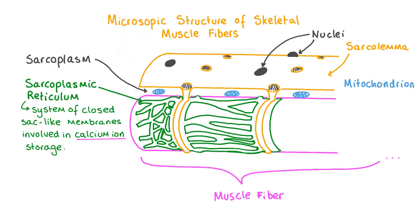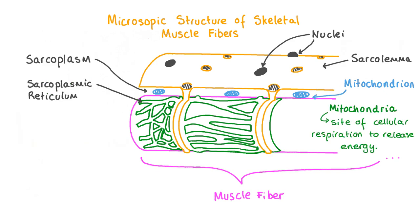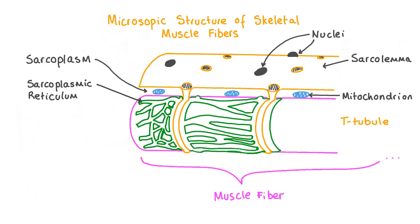Muscle cells require a large amount of energy when they contract, so they also contain many mitochondria, which are the site of cellular respiration to release the energy needed for muscular contraction. Parts of the sarcolemma surrounding the muscle fiber fold inwards to form structures called transverse or T-tubules. This means that an impulse arriving from a motor neuron can spread along the whole muscle fiber's sarcoplasm so that all the cells in the muscle can contract simultaneously.